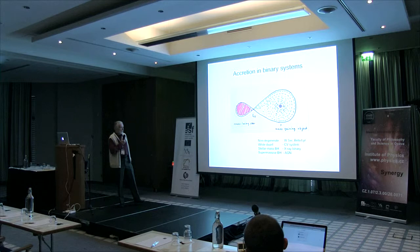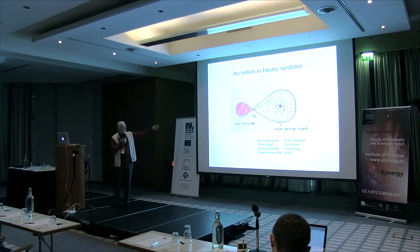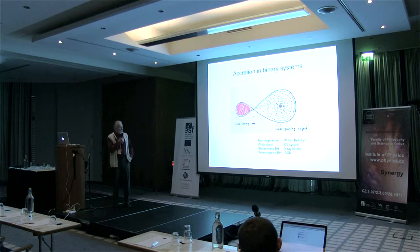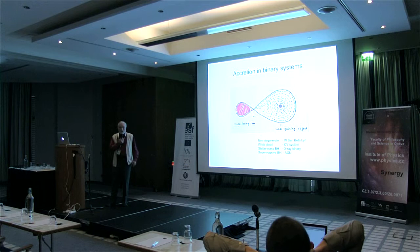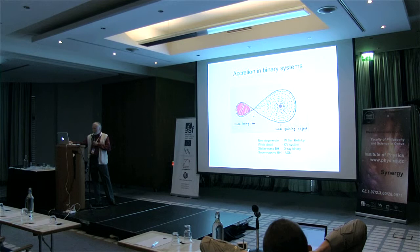Accretion can happen on many different types of objects. It can be a non-degenerate object, in which case one deals with systems like Beta Lyrae or W Serpentis stars. If the accreting object is a white dwarf, one deals with cataclysmic variables (CVs). If it is a stellar-mass black hole, it's a low-mass X-ray binary. And it can also be a supermassive black hole, in which case one speaks about AGN.